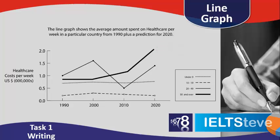Remember, the key data and key numbers in a line graph with lots of information are going to be the start, the finish, the top and the bottom. That's always key data.